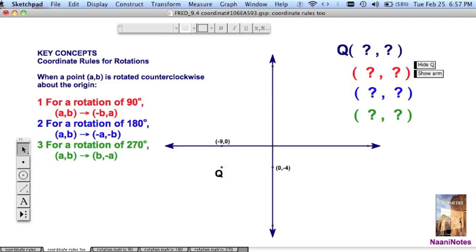I'm doing this one just because it's a little bit different. Q, it's negative nine, negative four. So let's put that in there, negative nine. Go ahead and type that in there, negative four. Let's show the arm.